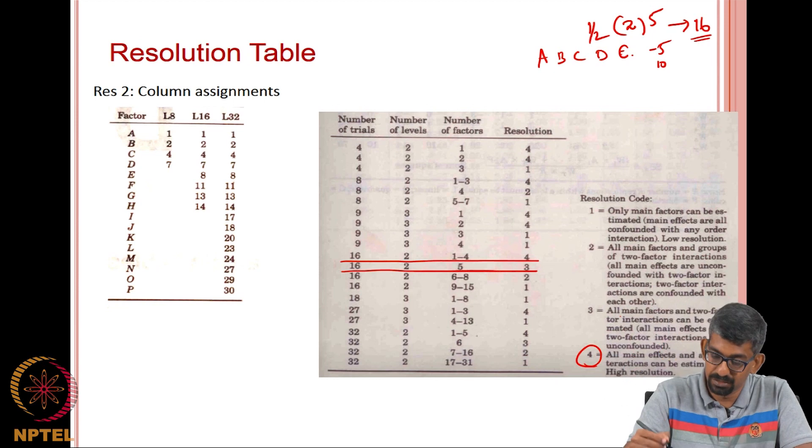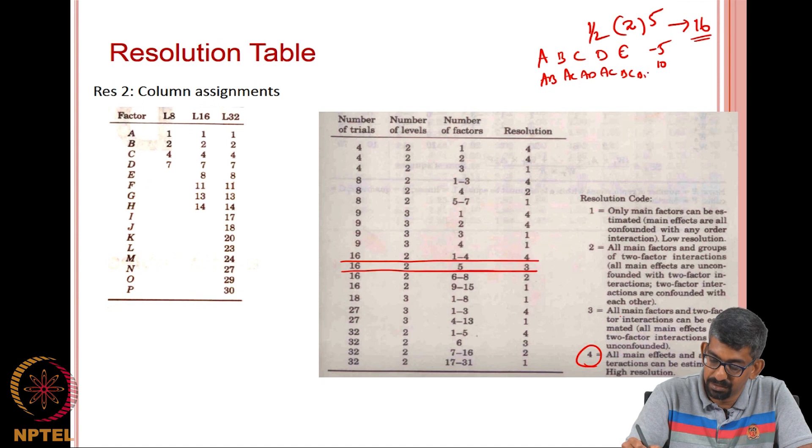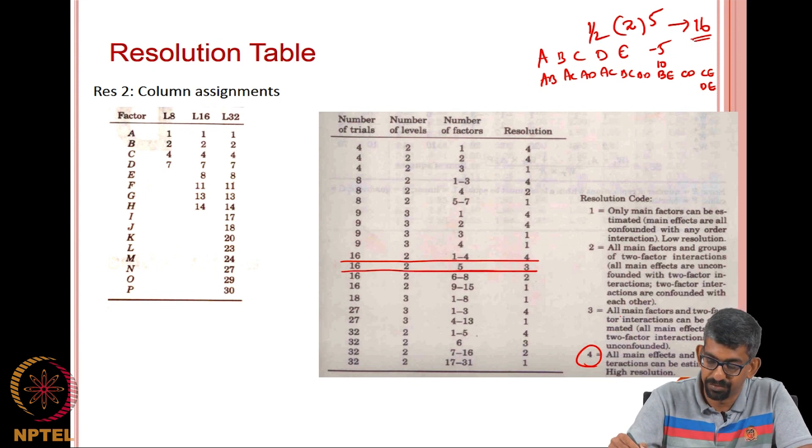The next one is if, but however, if you wanted to have A, B, C, A, B, D, A, B, E and all that then you cannot use this particular stuff. If all the main factors and two factor interactions unconfounded that is important, then it is called level 3.